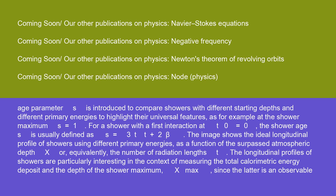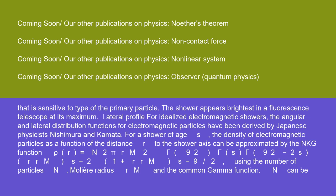The shower age parameter S is introduced to compare showers with different starting depths and different primary energies to highlight their universal features, as, for example, at the shower maximum, S equals 1. For a shower with a first interaction at t_0 equals 0, the shower age S is usually defined as S equals 3t / (t plus 2 beta). The image shows the ideal longitudinal profile of showers using different primary energies as a function of the surpassed atmospheric depth x, or, equivalently, the number of radiation lengths t. The longitudinal profiles of showers are particularly interesting in the context of measuring the total calorimetric energy deposit and the depth of the shower maximum, x_max, since the latter is an observable that is sensitive to type of the primary particle. The shower appears brightest in a fluorescence telescope at its maximum.